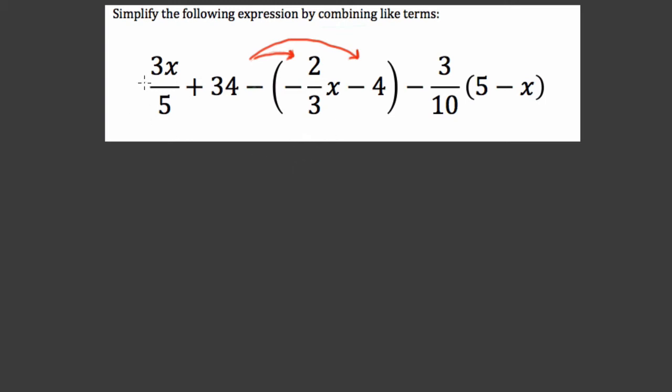So we start from left to right. Now first, 3x over 5, I'm going to rewrite that as 3 fifths x, and I think that's a key step here if you think about it. 3 times x over 5 is equal to 3 fifths x. We can test this out quickly by plugging in numbers.